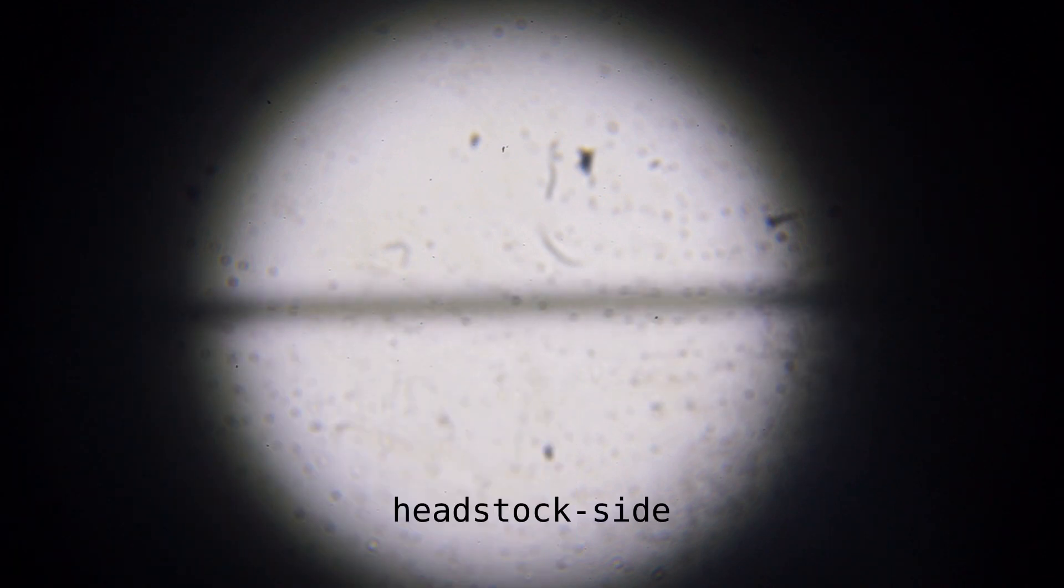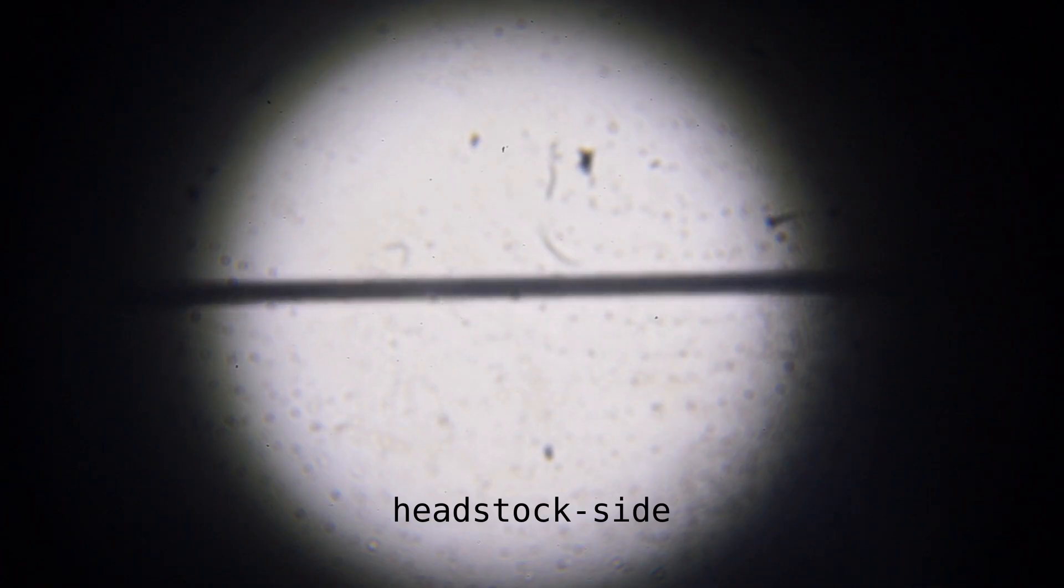First, the measuring wire had to be zeroed at the ends, centered horizontally and adjusted vertically to one level. To do this, I first used the lowest magnification of the microscope.